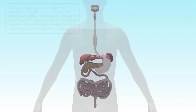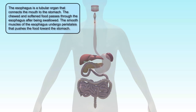The chewed food, after being swallowed, passes through the esophagus, a tubular organ that connects the mouth to the stomach. The smooth muscles of the esophagus undergo peristalsis that pushes the food toward the stomach.